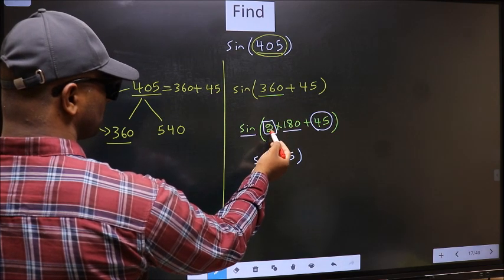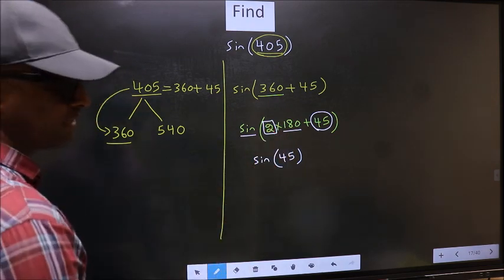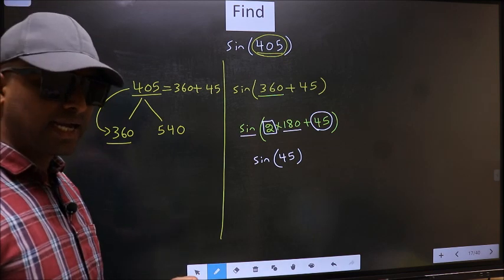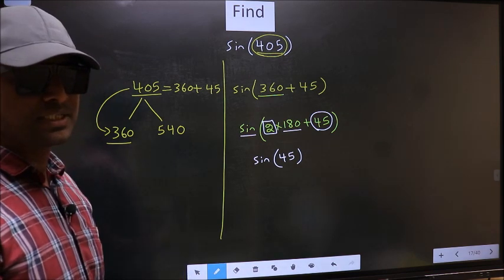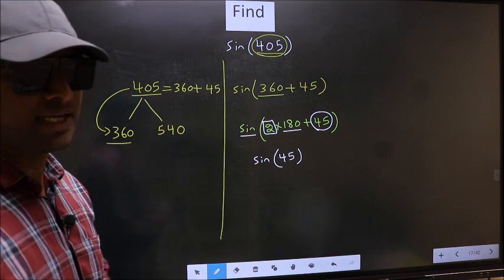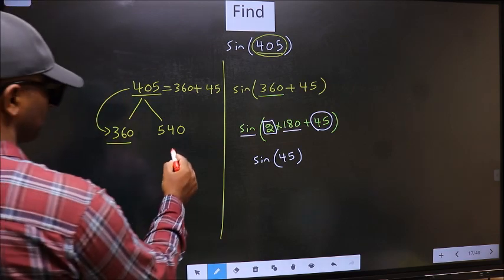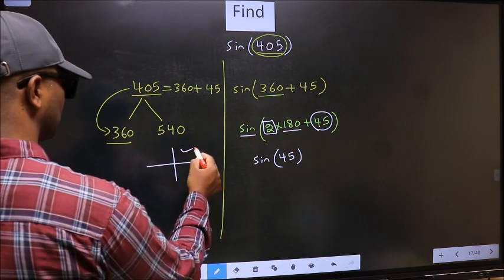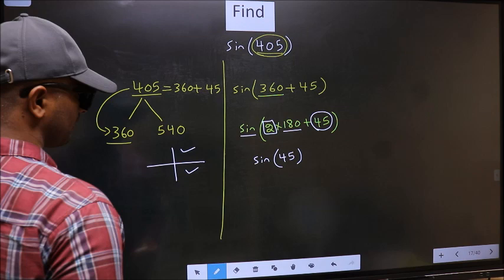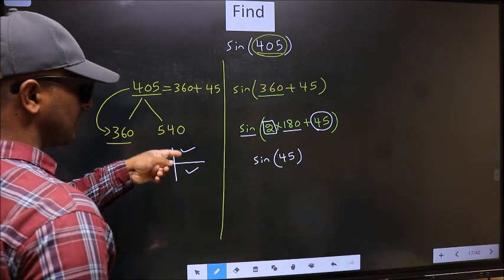That is 2. And 2 is even. And all the even multiples of 180 lie either in the first or in the fourth quadrant.